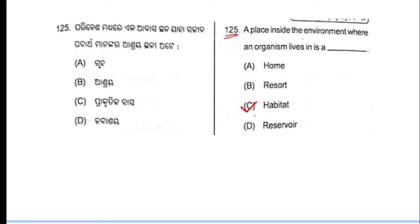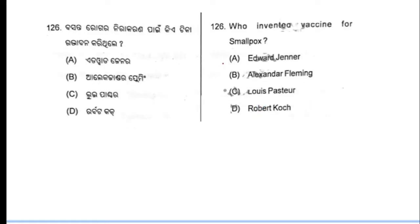Now moving to next question. Question number 126: who invented the vaccine for smallpox? The correct answer is Edward Jenner.